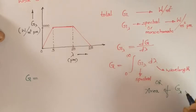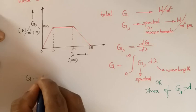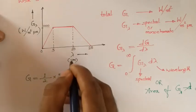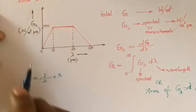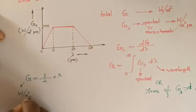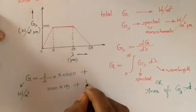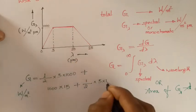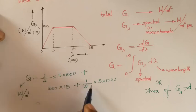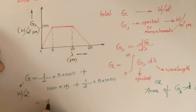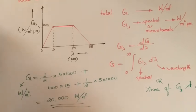Total irradiation equals the area of the G_lambda versus lambda graph. The first triangular part gives half times 5 times 1000 equals 2500 watts per meter square. The rectangular part gives 1000 times (20 minus 5) equals 15,000 watts per meter square. The third triangular part gives half times 5 times 1000 equals 2500 watts per meter square. The total irradiation is therefore 2500 plus 15,000 plus 2500 equals 20,000 watts per meter square.